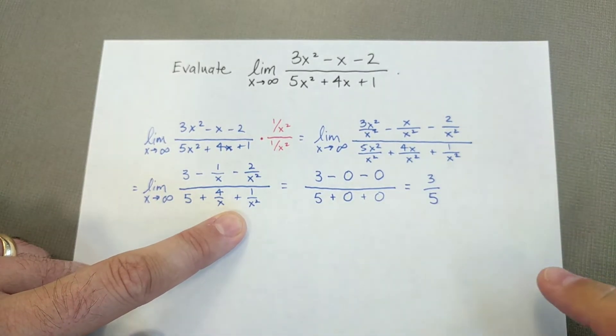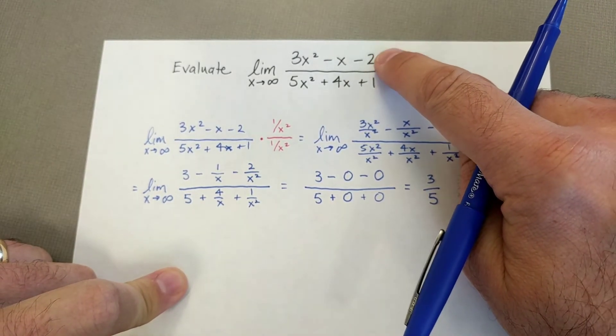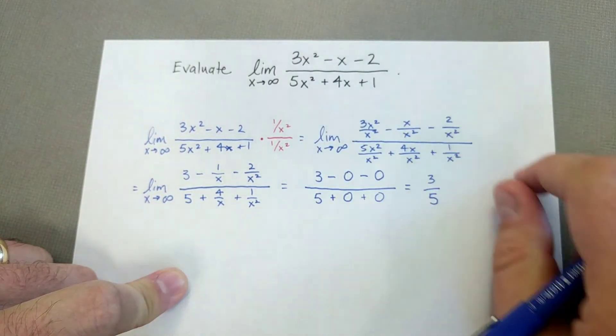The limit is 3 fifths, which is consistent with sort of our intuitive way of thinking about this of neglect the slow things. And then, oh, what are you left with? Well, divide those and you're left with 3 fifths.